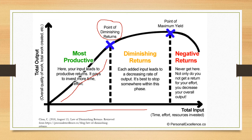When that's happening, you're still doing pretty good work — your total output is still going up and up, and you should still remain working and doing what you're doing. However, at some point you're going to hit the point of maximum yield.